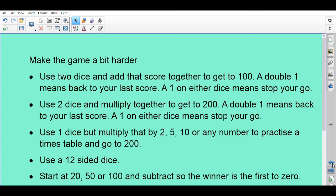You could use one dice but multiply that by 2, 5, 10, or any other number to practice a times table that you want to do. So you could multiply by seven or twelve or nine or whatever you want to practice and go to 200. You could use a 12-sided dice if you have one at home, or you can make a dice and put different numbers on.